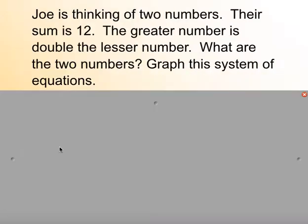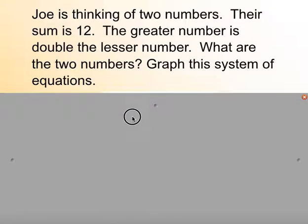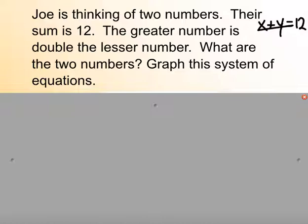Let's try a different one. Joe is thinking of two numbers. Their sum is 12, and the greater number is double the lesser number. What are the two numbers? If the sum is 12, we have x plus y equals 12. And if the greater number is double the lesser, then y equals 2 times x. Now we have two equations to graph.